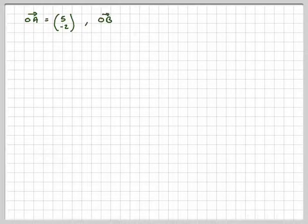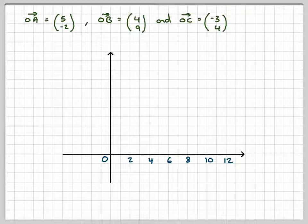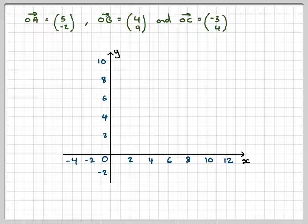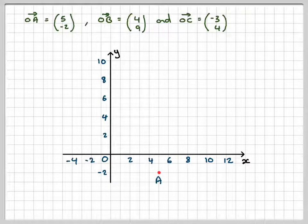So you've got OA is (5, -2), OB is (4, 9), OC is (-3, 4). So drawing a set of X, Y axes, marking it on the point A. So A is 5 along, 2 down. OB is going to be 4 along, 9 up. That's there.